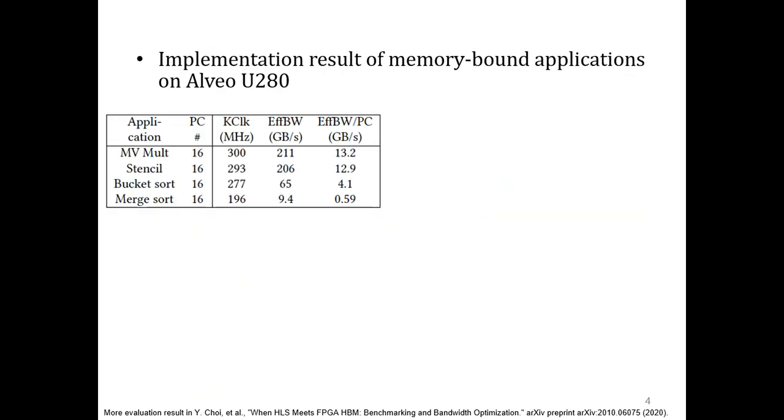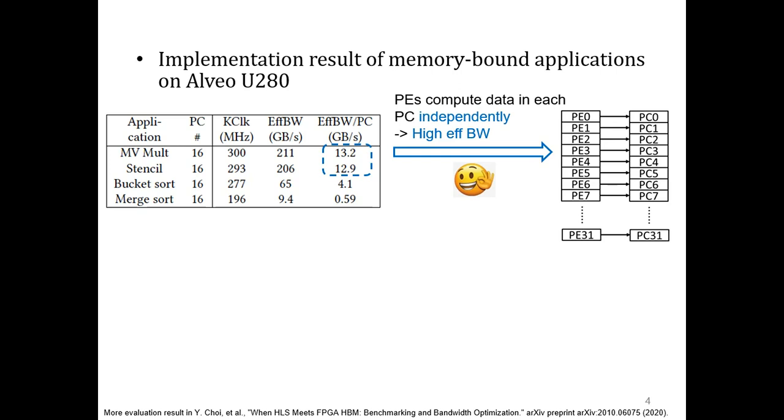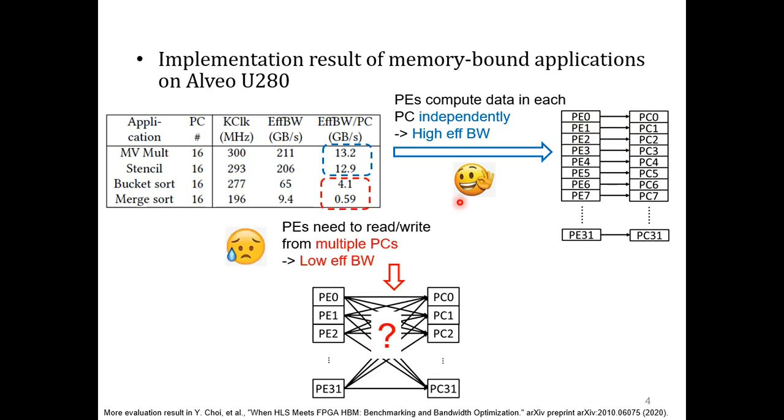We implemented some memory-bound applications using HLS on Alveo U280. You can see that we obtained a high memory bandwidth around 13 GB per second for kernels that can be computed in each pseudo-channel independently. But for applications that read or write from multiple PCs, we found that the effective bandwidth is quite low. So why is this happening?